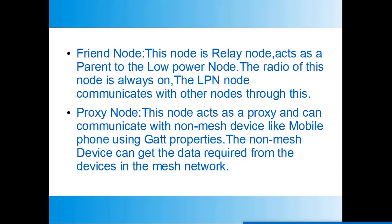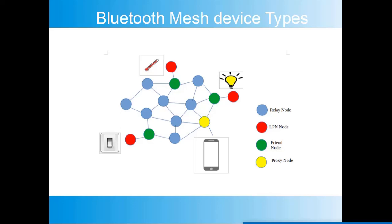This image shows the Bluetooth mesh device types. The relay nodes form the backbone of the network. One LPN node has a switch connected to it; another LPN node has a light or lamp connected, and another LPN node measures temperature. These LPN nodes are connected to the mesh network through the green-colored friend node. A mobile phone is connected to the network through the proxy node and can see the light status, temperature value, and switch status.